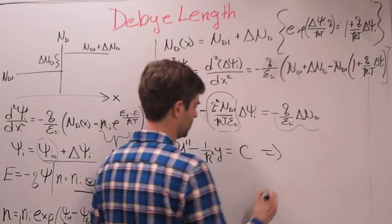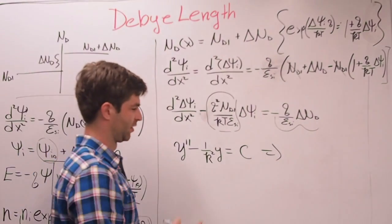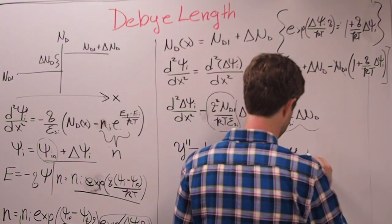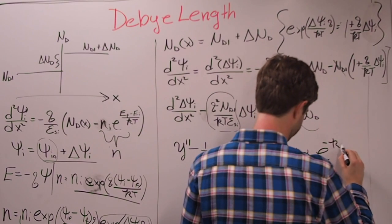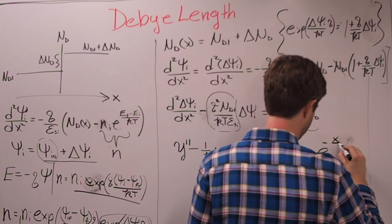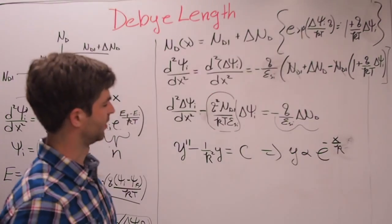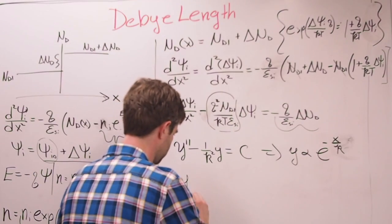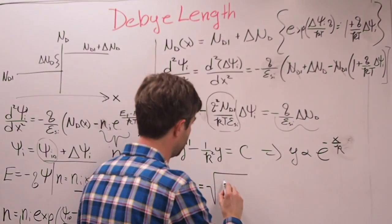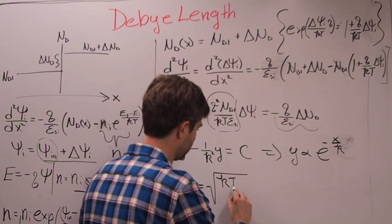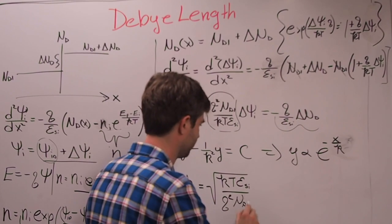This whole thing is in the form of Y double prime minus one over K squared Y equals some constant called C. And we know that the particular solution of the general solution of this is Y is proportional to some exponential to the negative X over K. So what is K in this case? Well, K is equal to square root of KT epsilon SI over Q squared Nd1.